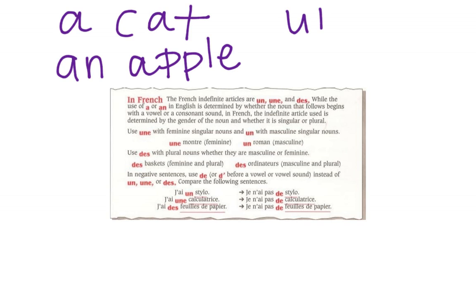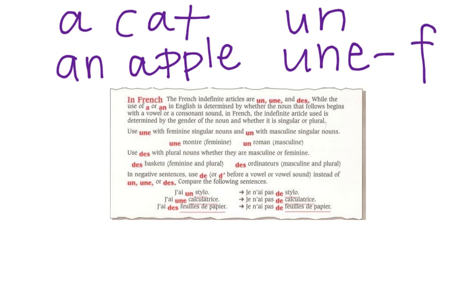In French, you have un and une. Un means 'a' or 'an,' and une also means 'a' or 'an.' It just depends on whether the noun that follows is masculine or feminine. You use une with feminine and singular nouns, and you use un with masculine and singular nouns.